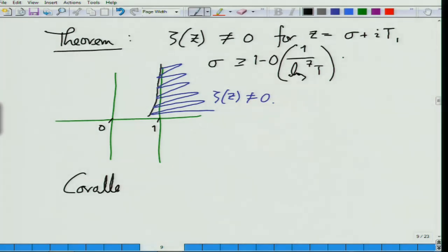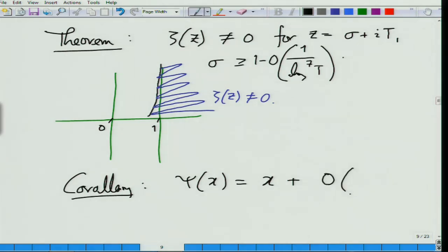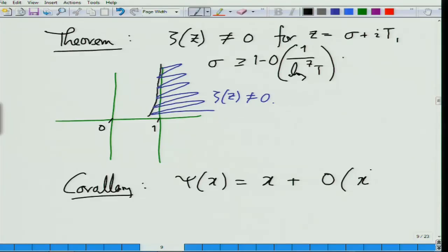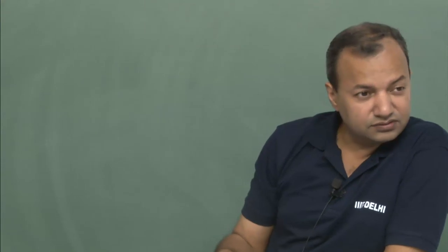What is the corollary of this? So psi(x) is x plus order — how much? If the zeros were only at σ equals one-half then the error would be square root of x times log squared. But now they are not; they are away from one-half, therefore much closer to 1. What will come out is something like x to the 1 minus o(1), something very very small. I will not do that part because this is sufficient to apply all of this.